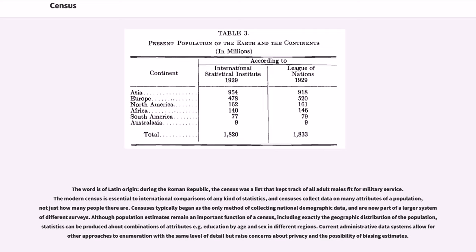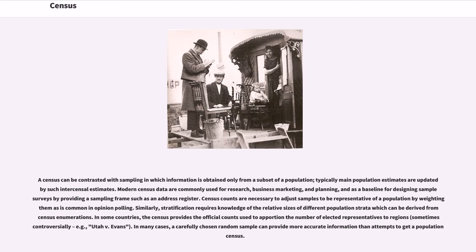Current administrative data systems allow for other approaches to enumeration with the same level of detail, but raise concerns about privacy and the possibility of biasing estimates. A census can be contrasted with sampling, in which information is obtained only from a subset of a population. Typically, main population estimates are updated by such inter-censal estimates.